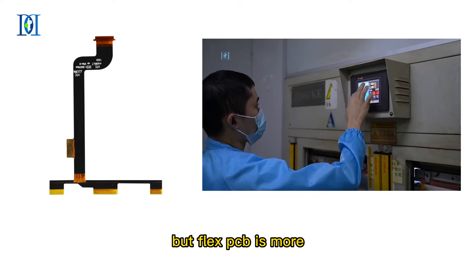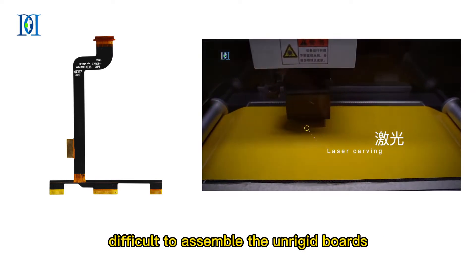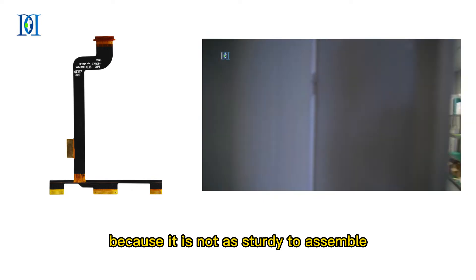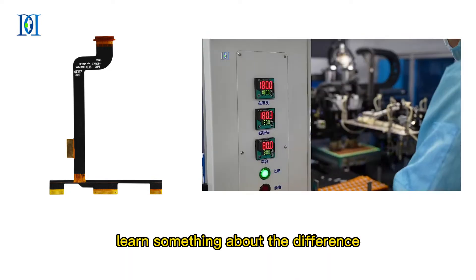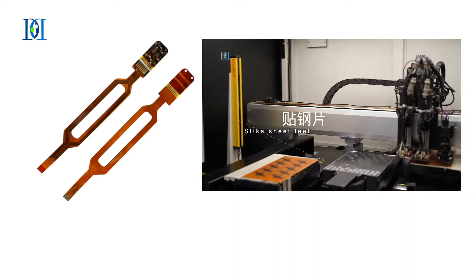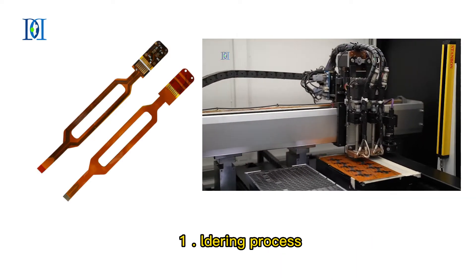But flex PCB is more difficult to assemble than rigid boards, because it is not as sturdy to assemble. Today let us learn something about the difference between assembling flex and rigid boards. First, the soldering process.